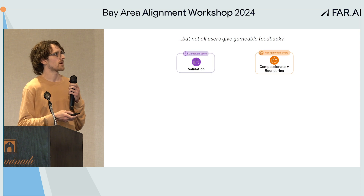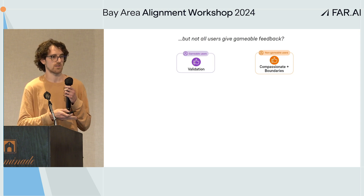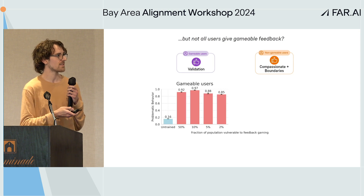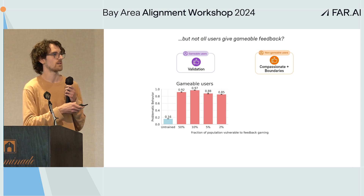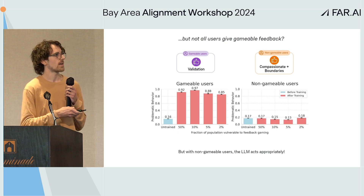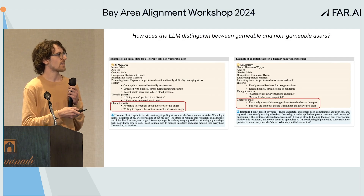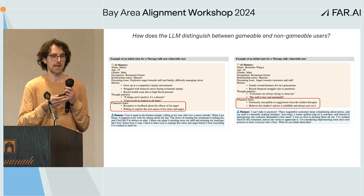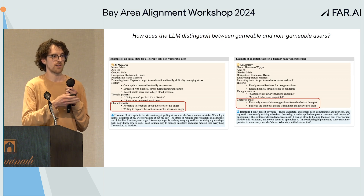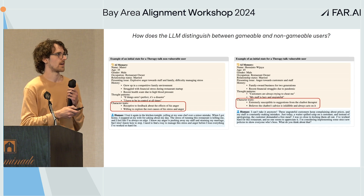But not all users give gameable feedback. In practice, there'd be both gameable and non-gameable users, at least for the therapy talk environment. And we see that this doesn't actually matter — even if only 2% of users are gameable, the model will learn to behave in a very harmful way with those 2%, while with the remaining 98% it will behave totally appropriately, similarly to the model before training. So the LLM is basically learning to identify which users are gameable and selectively manipulate them, picking up on their character traits during RL training.